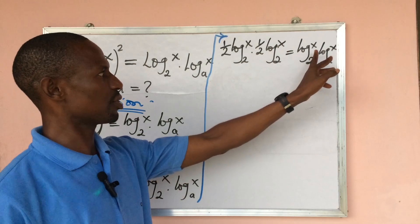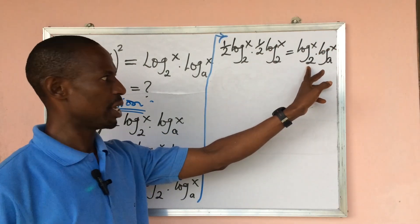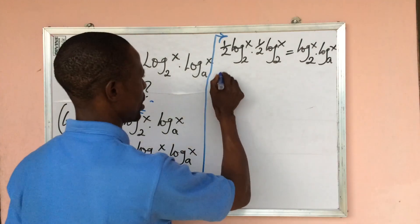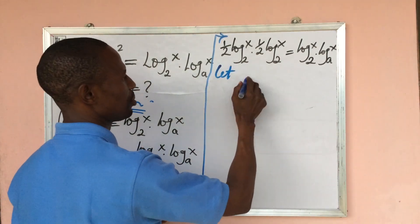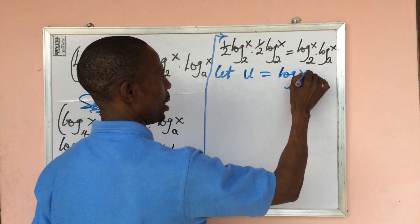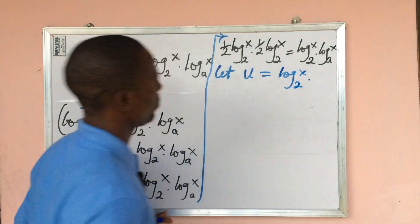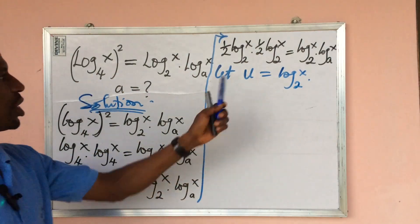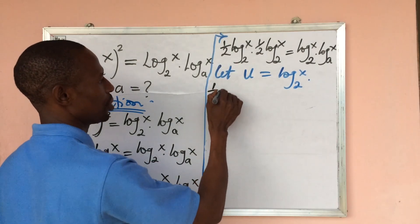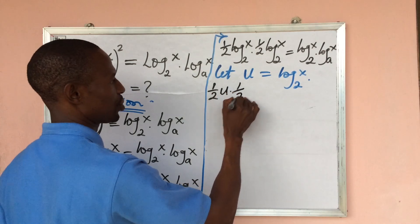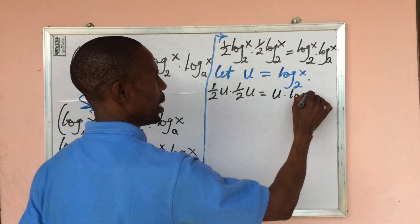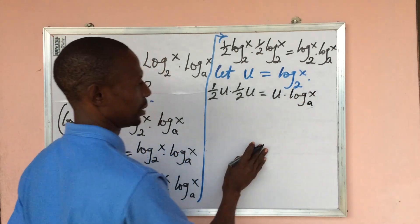We can introduce a substitution — let u equal log x base 2. Wherever we see log x base 2, we put u. So we have: one-half u times one-half u equals u times log x base e.